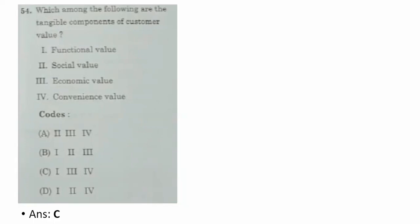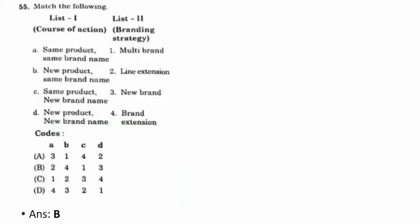Fifty-fifth question: branding strategy — match product/brand combinations. For A — same product, same brand name: line extension. For B — new product, same brand name: brand extension. For C — same product, new brand name: multi-brand. For D — new product, new brand name: new brand. The correct answer is B — options two, four, one, three related to A, B, C, D.